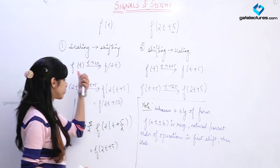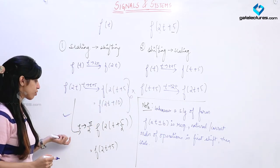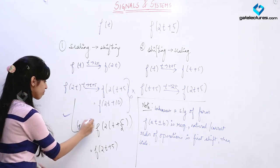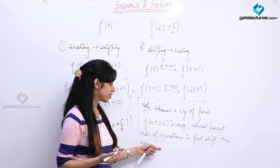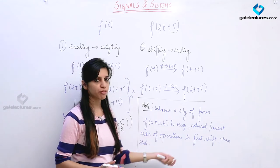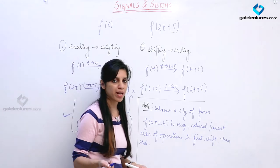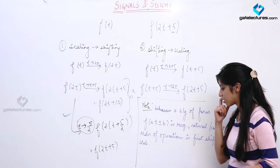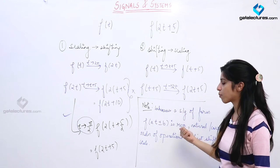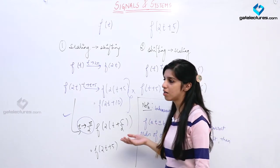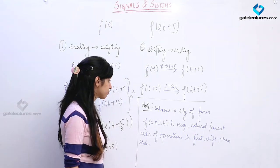Scaling here includes reversal, because reversal is a kind of scaling — you are multiplying t by minus 1. So if an operation involves shifting and reversal, you perform shifting first and then reversal. If a signal involves only scaling and reversal, the order does not matter — you can scale first or reverse first and it will not make a difference.